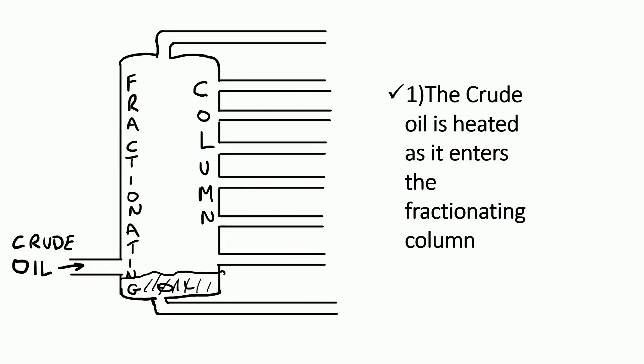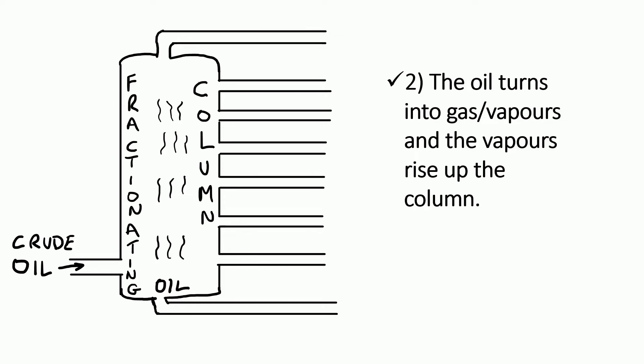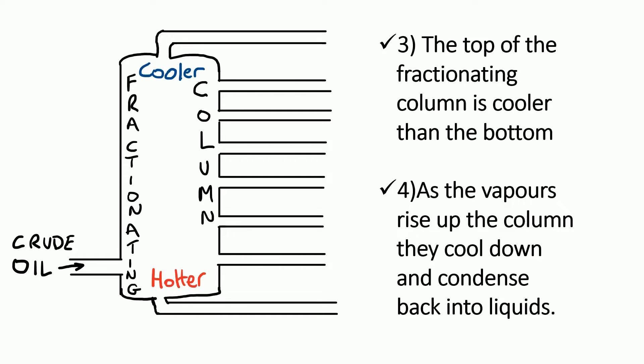One of those large structures on the previous photo would be the fractionating column, and as the crude oil enters the fractionating column, it is heated up. The heat causes the crude oil to turn into gas or vapours, and these vapours start to rise up the column. Now because the fractionating column is such a tall structure, and it's only been heated at the bottom, it means the top of the column is cooler than the bottom of the column.